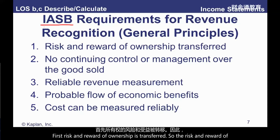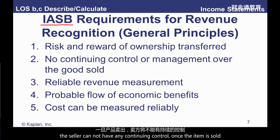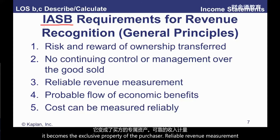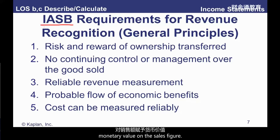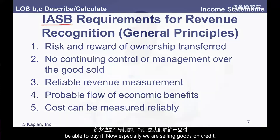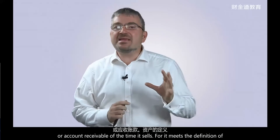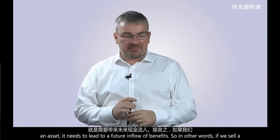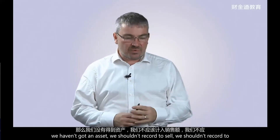Under International Accounting Standards, to record a sale we need: risk and reward of ownership transferred from seller to buyer; no continuing control or management over the goods sold; reliable revenue measurement — we can put a monetary value on the sales figure; probable flow of economic benefits — we have the expectation that the customer will be able to pay us. If selling on credit, we create a trade receivables asset, which must lead to a future inflow of benefit.